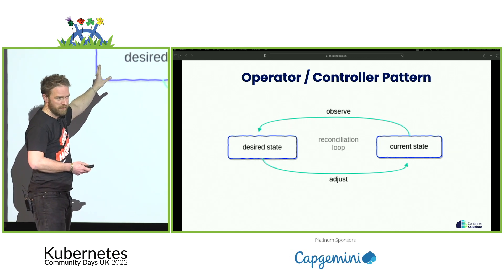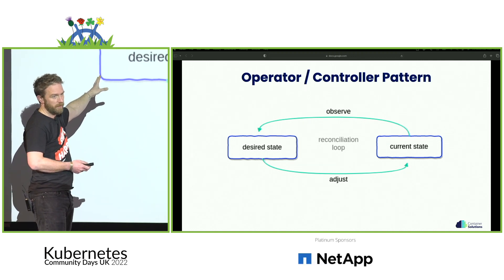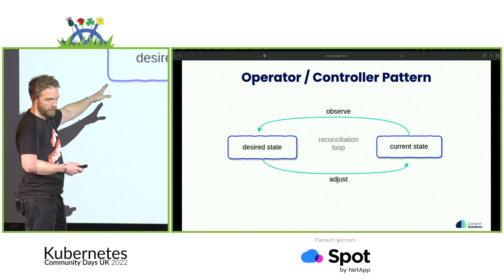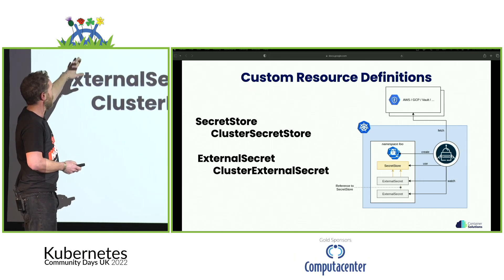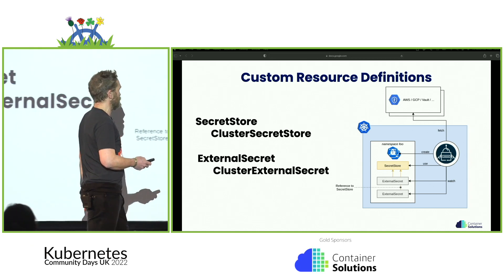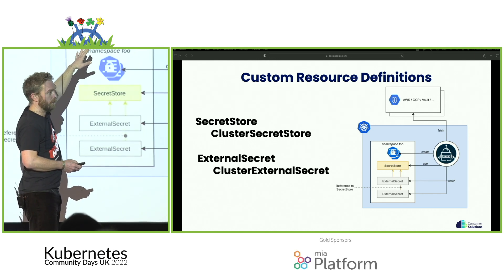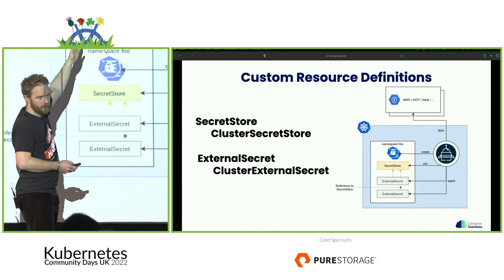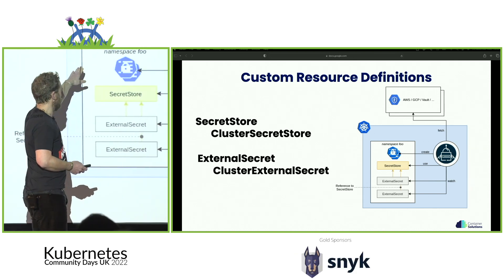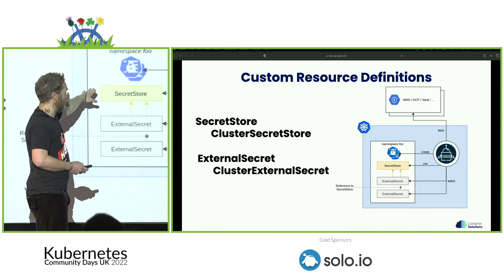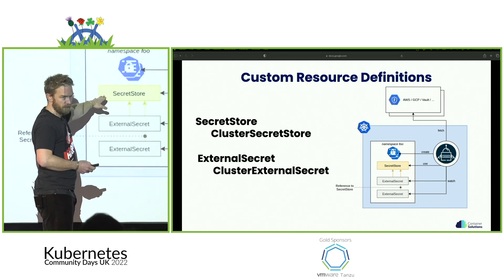An operator is really an application-aware controller pattern. In our case, the custom resource definitions we're using concern secrets, so our operator is simply a controller which is aware of secrets. The CRDs we use are SecretStore — which controls all the information you need to connect to your third-party secret store. In the example of AWS, it will tell you which account, which ARN, which role you're going to use to connect to the secrets provider. The SecretStore is per namespace, so each namespace will have its own SecretStore CRD and will only have access to the secrets that particular namespace needs.